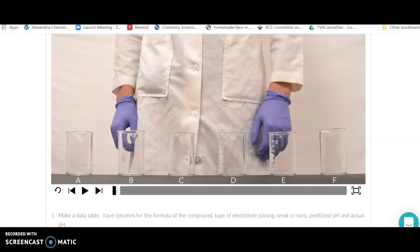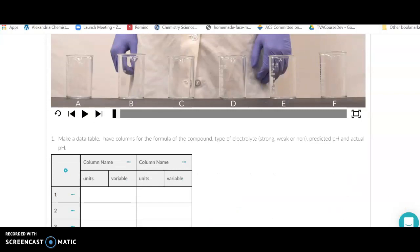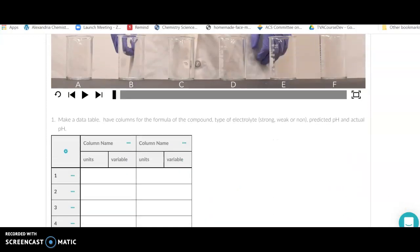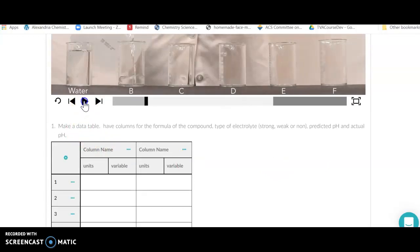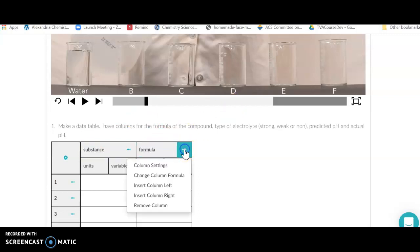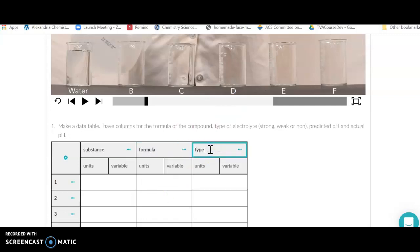Continuing this one down, you're going to answer some questions on what are going on in terms of the colors and the indicators. Then you're going to look here in the next video, play it, and it's going to show you what the substances are. Once you've seen what the substances are, I need you to make a data table here where you're going to put the substance, the formula, the type of electrolyte, predicted pH, and actual pH.